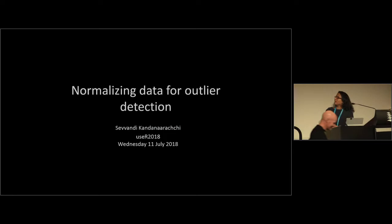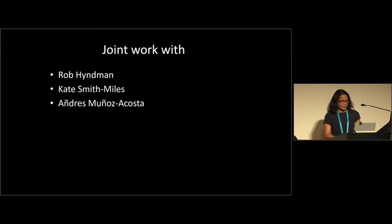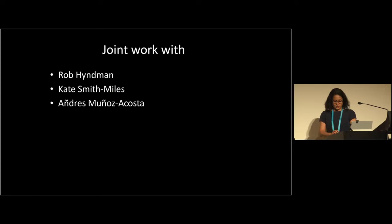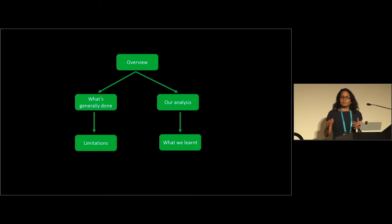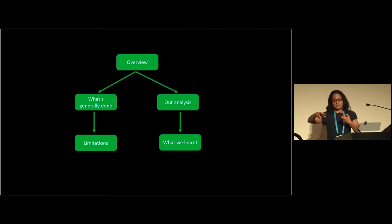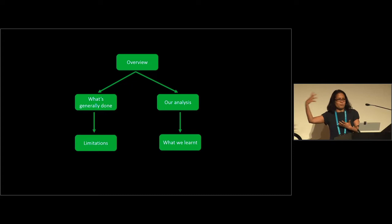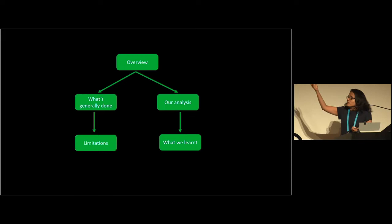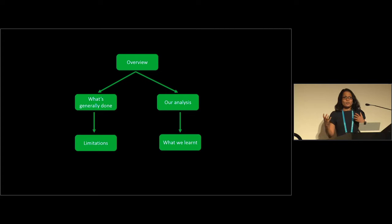I'm going to talk about normalizing data for outlier detection. This is joint work with Rob Hyman, Kate Smith-Miles, and Andres Minas Acosta. In outlier detection, we generally normalize data. For example, if we have people's data with height, weight, and income in dollars, it doesn't make sense to find outliers without normalization — you'd only find income-related outliers. So we have to normalize data. The question is: what's generally done, what are the limitations, and what have we learned from our analysis?